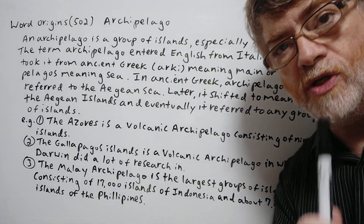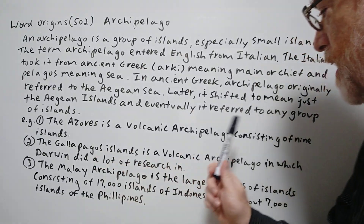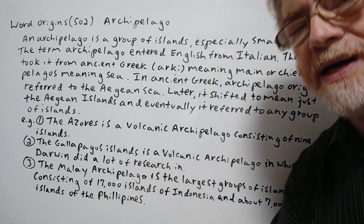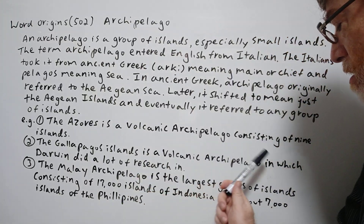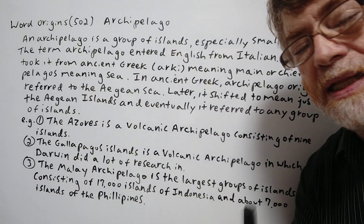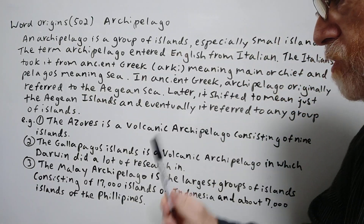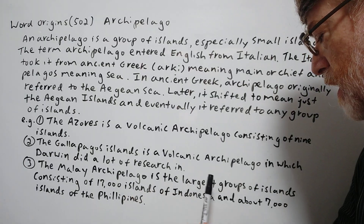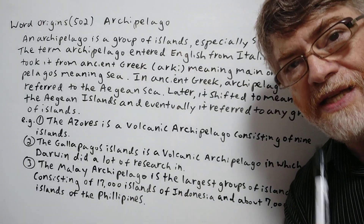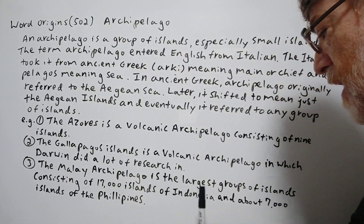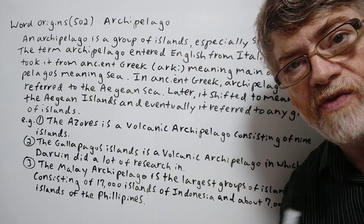We've got three examples here to show just how it's used. The Azores is a volcanic archipelago consisting of nine islands. The Galapagos Islands is a volcanic archipelago in which Darwin — Charles Darwin — did a lot of research. The Malay Archipelago is the largest group of islands, consisting of 17,000 islands of Indonesia and about 7,000 islands of the Philippines.